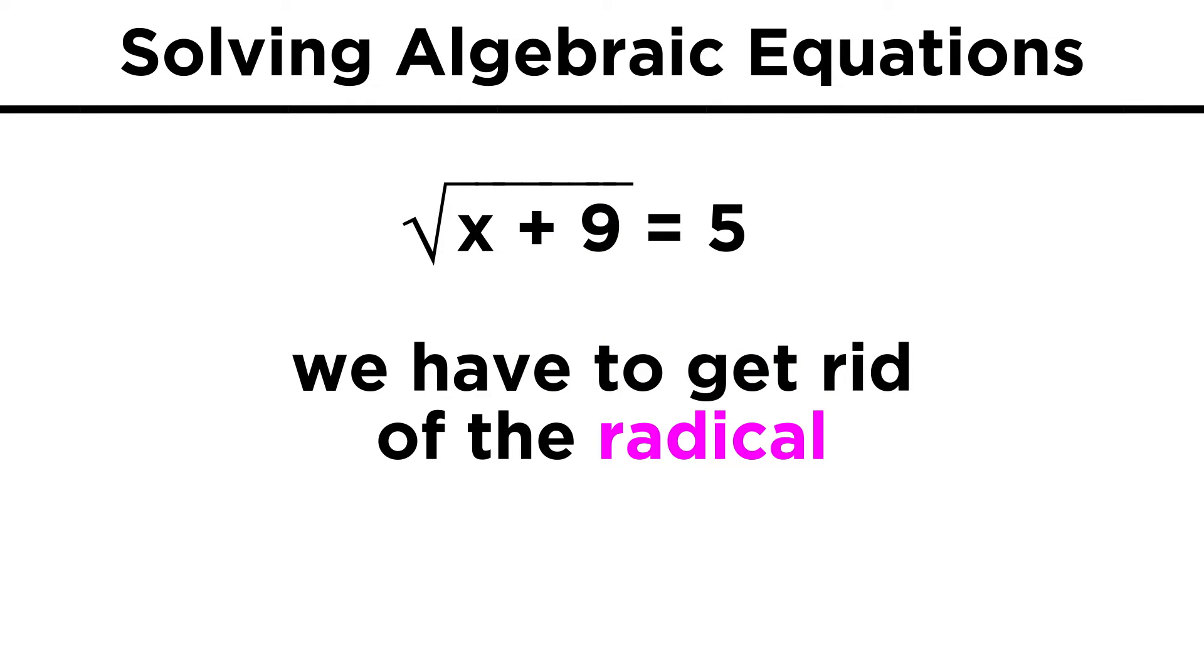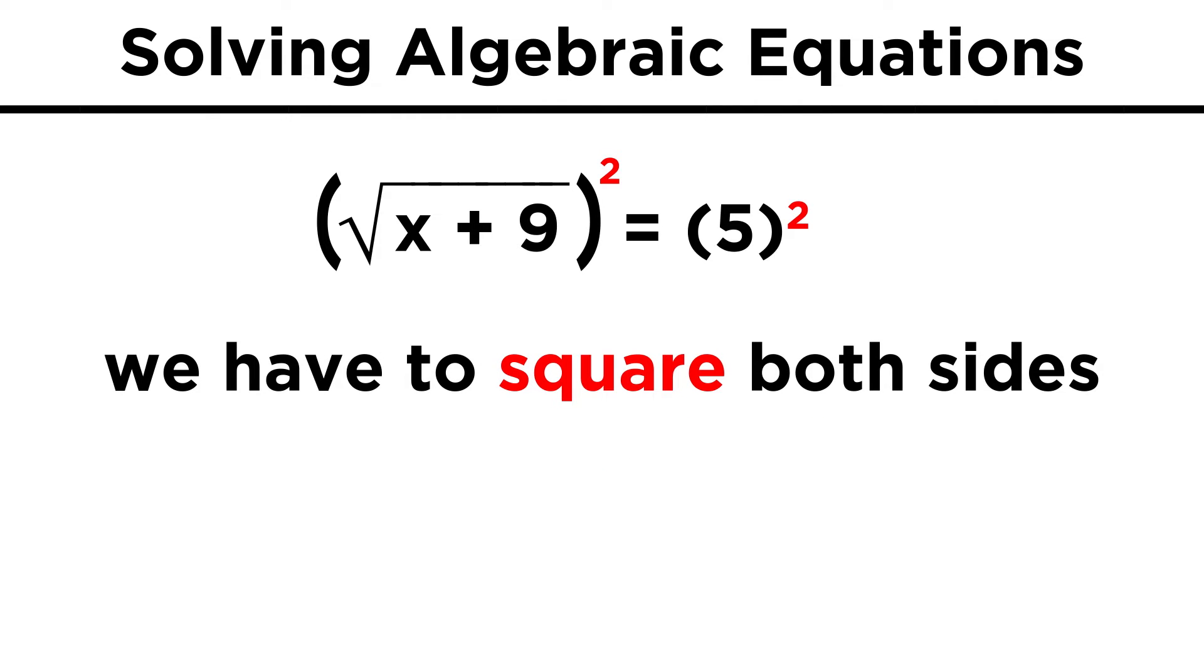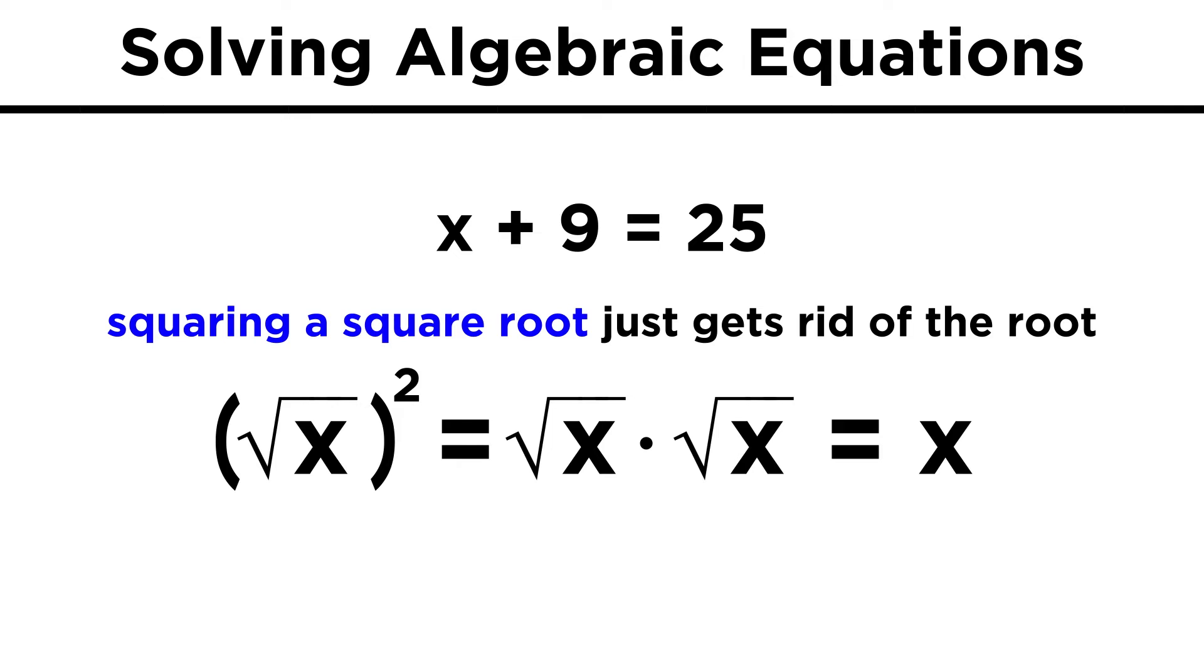Instead, we have to get rid of the square root first. Well, we know that the opposite of taking the square root of something would be squaring it, so we can square both sides to get rid of this square root. That gives us x plus nine equals twenty-five. To really prove that squaring a square root gets rid of the root, let's remember that taking the square root is the same as raising to the one-half power, so we can rewrite this equation like this.